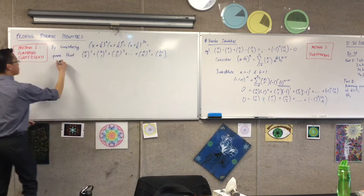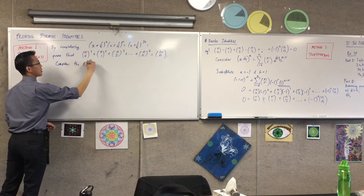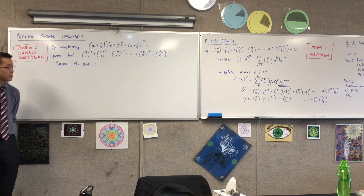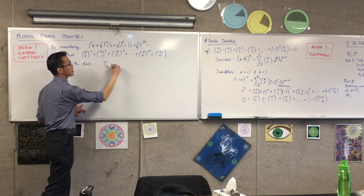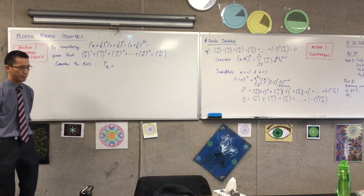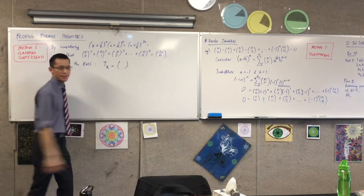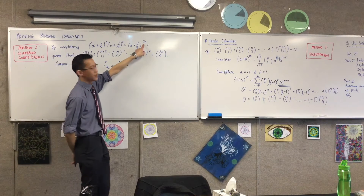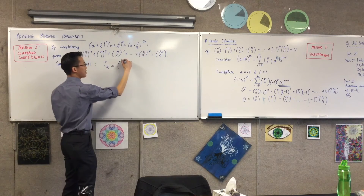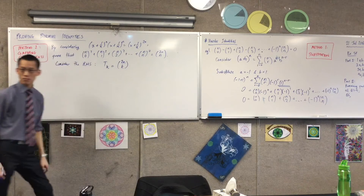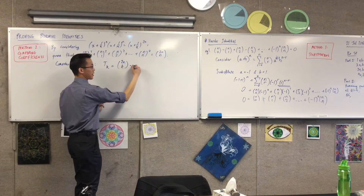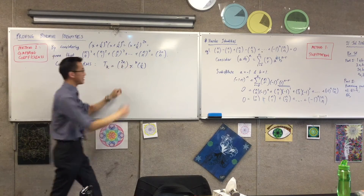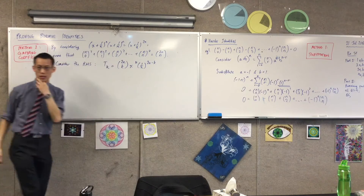Let's consider the right-hand side. For the right-hand side, in order to get to the independent term, I'm going to work out the general term first — that'll be the easiest way. So the kth term is going to be 2nCk. Then you have x — so how many x's? k of them — which means the other factor must contribute whatever adds up to 2n, so that's 2n minus k. Let's massage this a little bit to make it clearer what I'm dealing with.